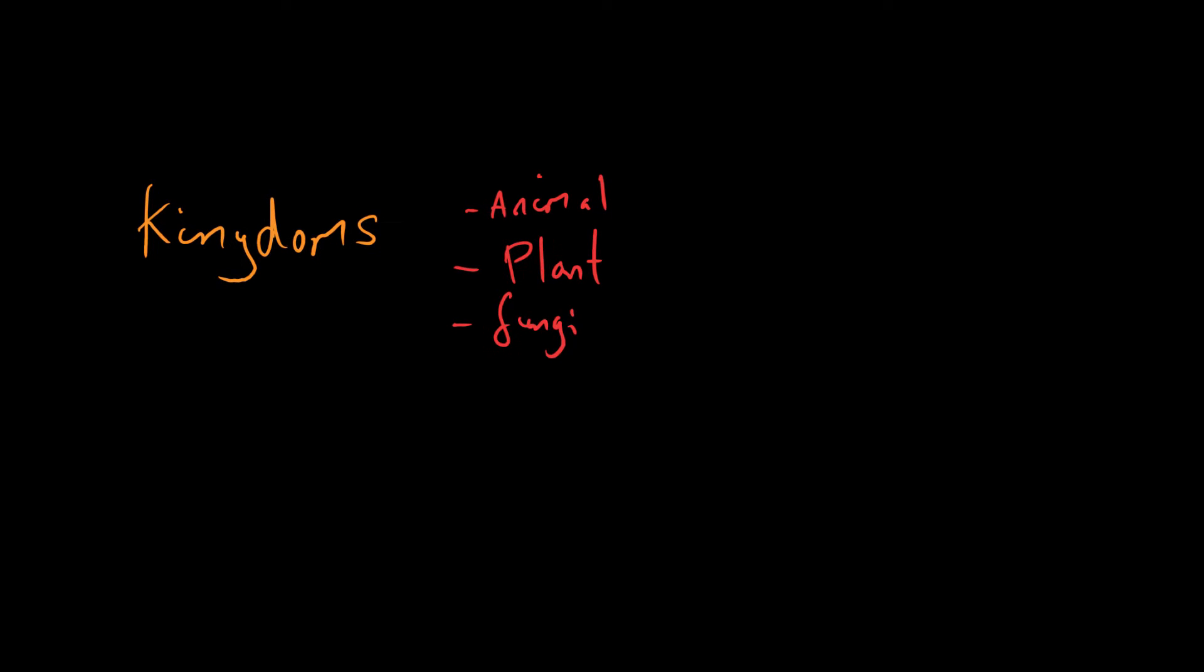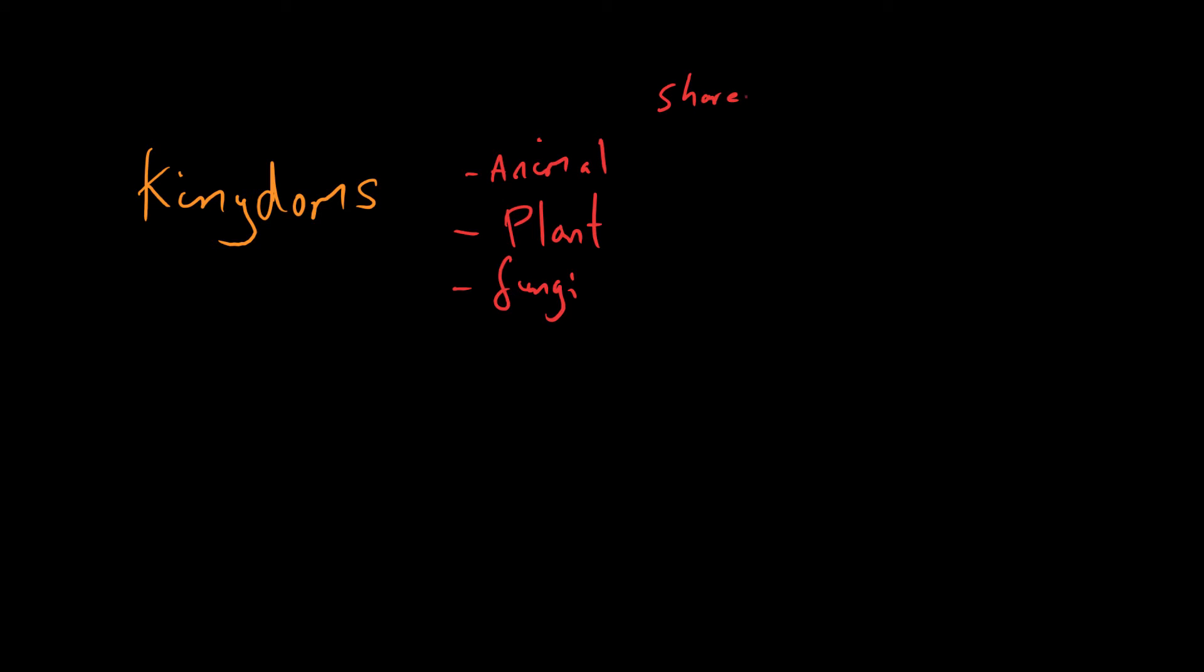And so there are loads of different organisms that are found in these groups. For example, we are of course in the animal kingdom and so is an elephant and so is a baboon. We're all pretty different to each other, but we all share certain characteristics.